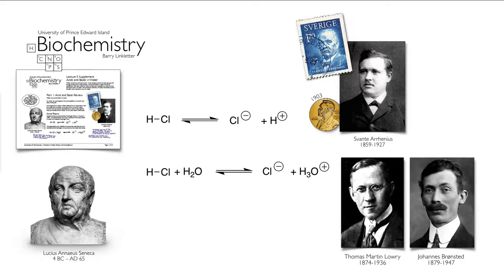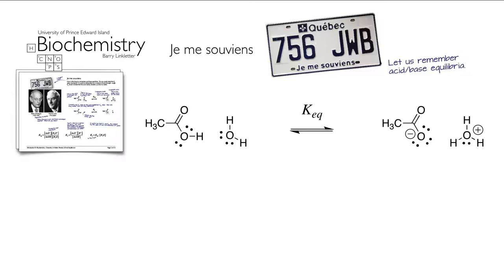About 20 years later, Bronsted and Lowry proposed that a proton doesn't just dissociate away — it must be accepted by something. An acid always gives its proton to a base. In this case, the base is water, which receives the proton and becomes the hydronium ion. This is the Bronsted-Lowry acid-base theory we use today: acids donate protons to bases, and there is always a conjugate pair. The conjugate acid is the base in its acid form; the conjugate base is the acid in its basic form.